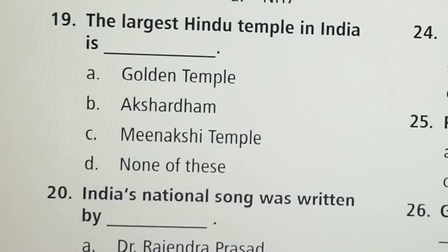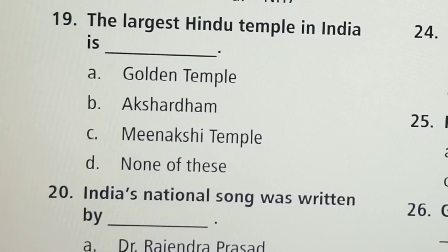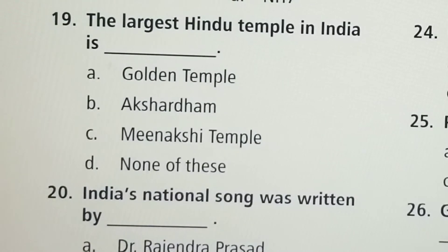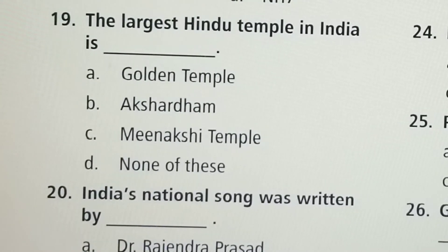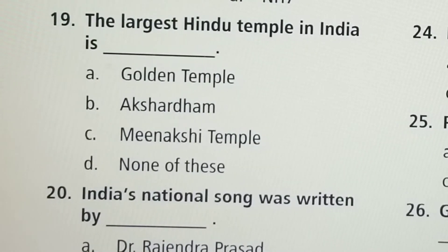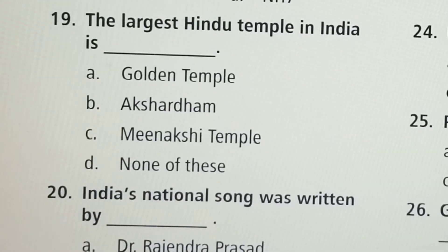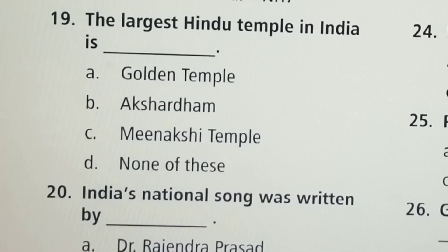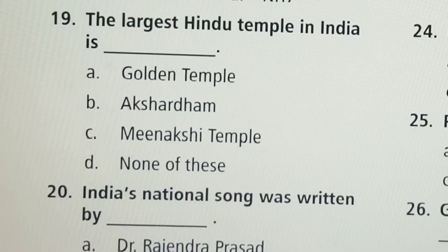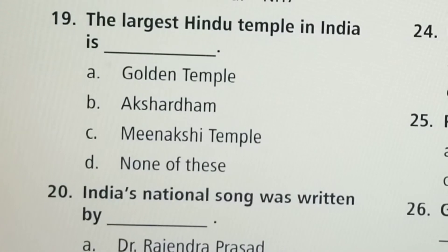Next question: The largest Hindu temple in India is — Option A: Golden Temple, Option B: Akshardham, Option C: Meenakshi Temple, Option D: None of these. Option B, Akshardham, is the correct answer.